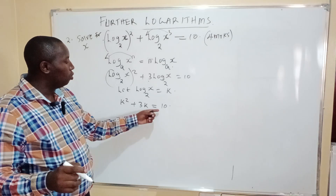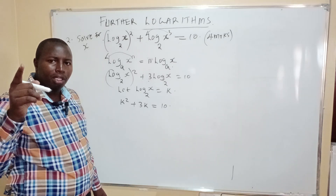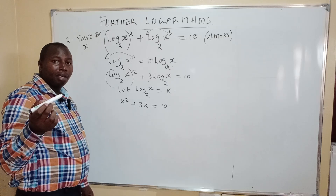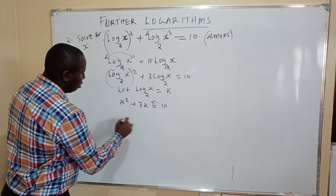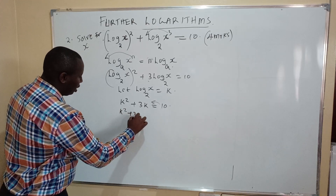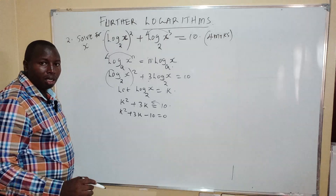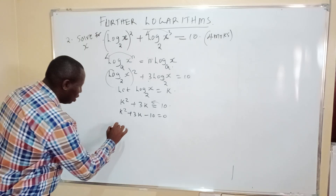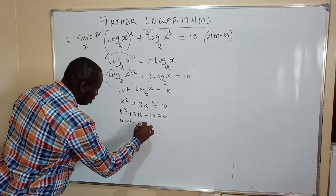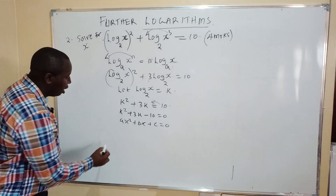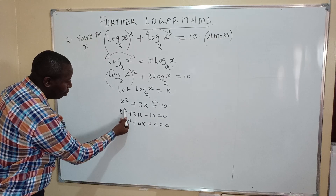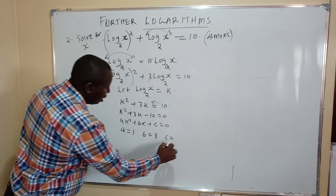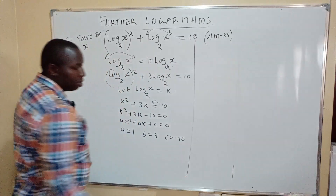This forms a quadratic equation. We can solve it by factorization. Rearranging: k squared plus 3k minus 10 equals 0. In the general quadratic form ax squared plus bx plus c equals 0, our a is 1, b is 3, and c is minus 10.